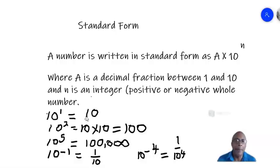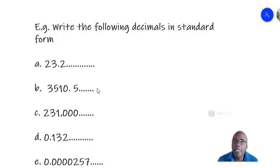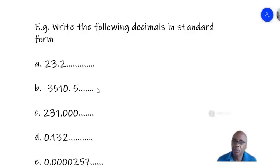Let's look at some examples — we are writing the following decimals a to e in standard form. Remember, the first part of the standard form must be a number between 1 and 10. So for example a, we have 23.2, which is greater than 10. How many places do we shift the point backwards to get a number between 1 and 10? That is one place, so we get 2.32.